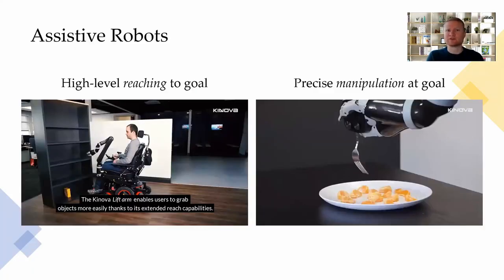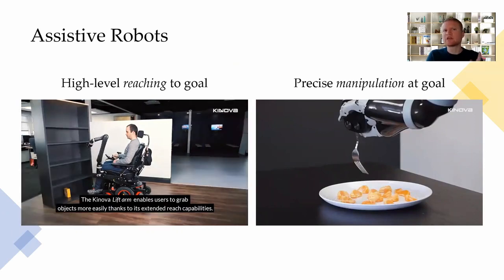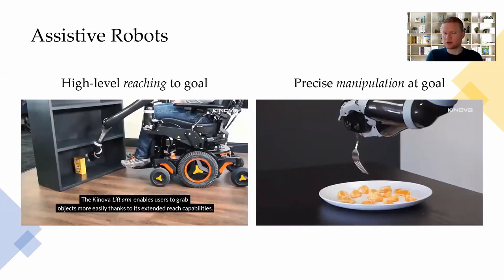When people living with physical disabilities interact with assistive robots, such as wheelchair-mounted robotic arms, they're faced with two challenges. First, they need to control the high-dimensional dexterous robot to reach towards their desired goal.